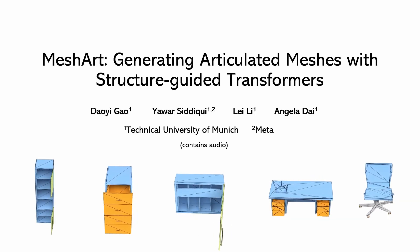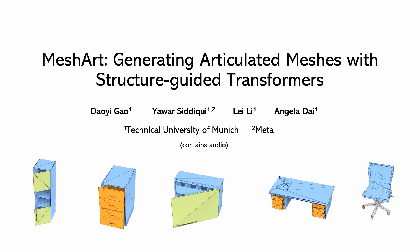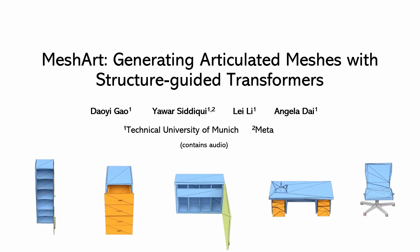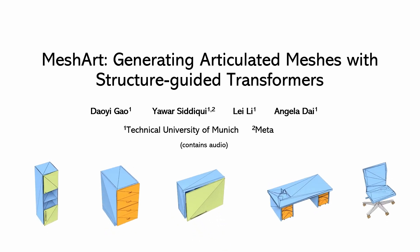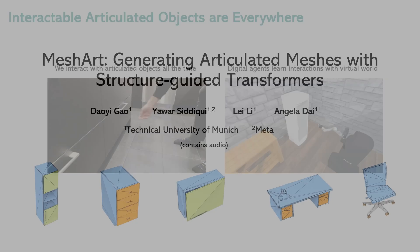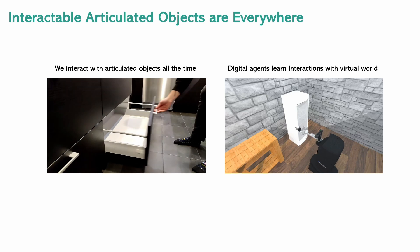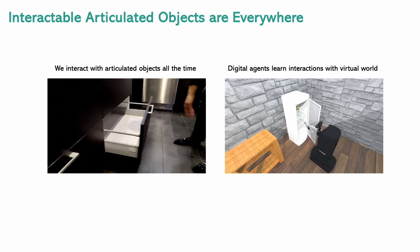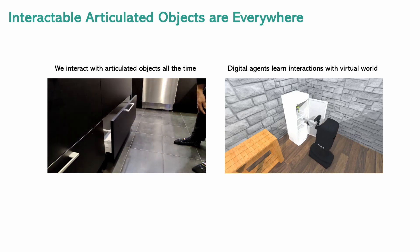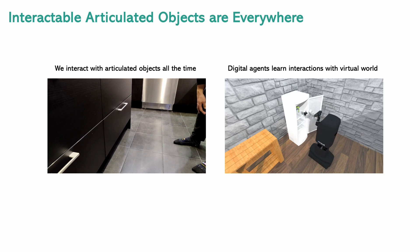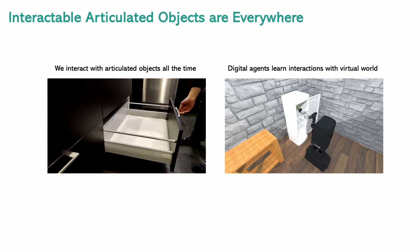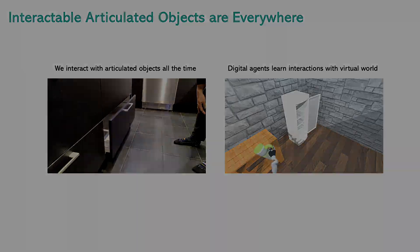We introduce MeshArt, a new method for generating articulated meshes with clean and sharp geometry, reminiscent of human-crafted designs. Articulated objects are all around us — for instance, doors that open and close — where their functionality depends on articulation. This makes it essential to model articulated objects to enable realistic, interactable 3D assets.